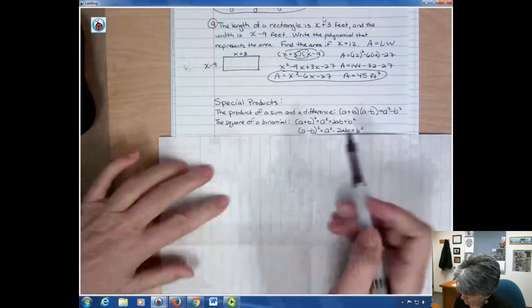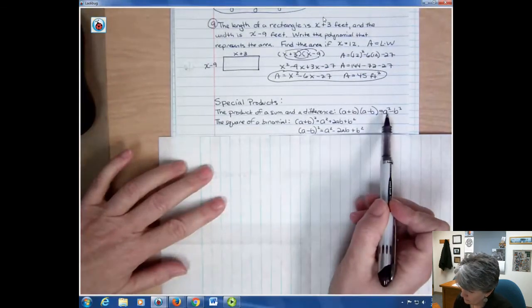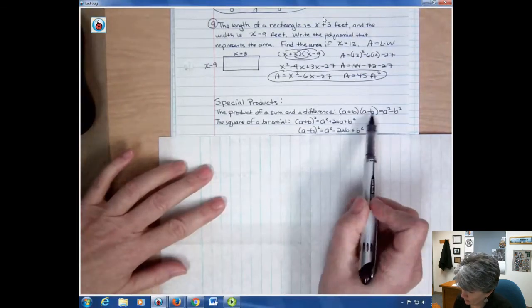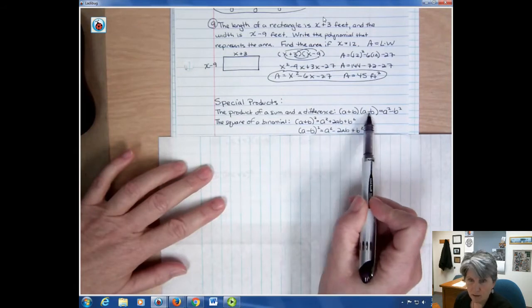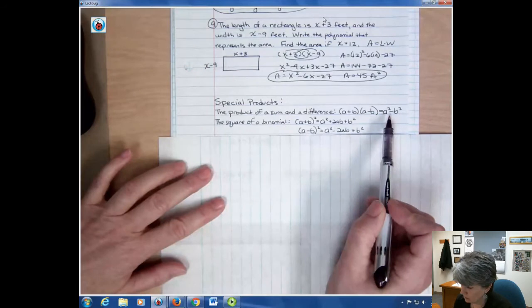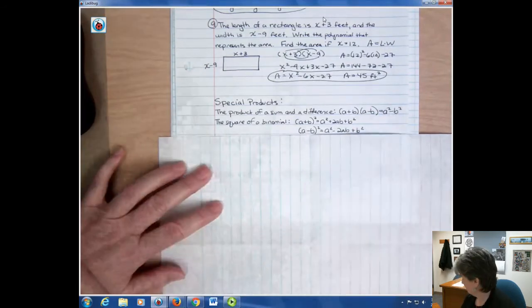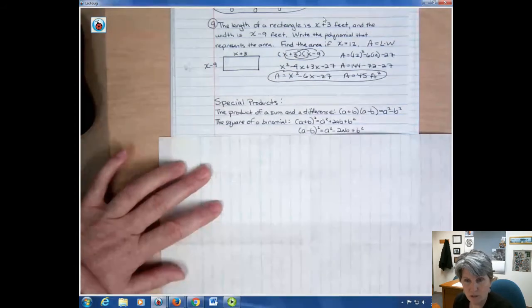But if you know these shortcuts, it can save you a little time. So we're saying the product of a sum and a difference is a squared minus b squared. That is, these two terms are exactly the same, but we have a different sign in between them. When that happens, your inside and outside terms drop out and you're just left with a squared minus b squared. And we looked at one of those in our last video. We saw the middle terms drop out. And that's a special product.